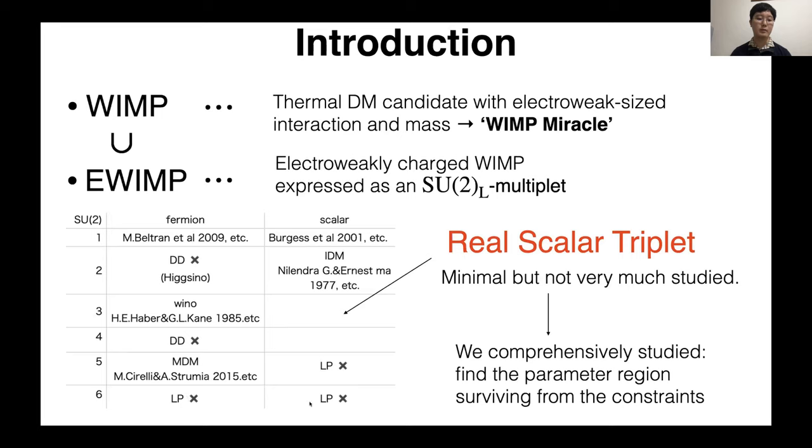DD and LP represent the constraint from direct detection and Landau pole. Fermion triplet is known as wino, quintuplet known as minimal dark matter, scalar doublet is known as inert doublet model, and they have been studied very much until now. However, scalar triplet is not very much studied yet, so we comprehensively studied it, concretely finding the parameter region surviving from the constraints.